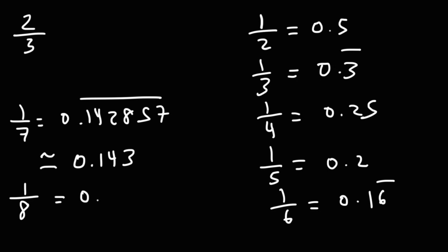1 over 8 is 0.125. 1 over 9 is 0.1 repeating. 1 over 10 is 0.1. 1 over 100 is 0.01. Notice the pattern.